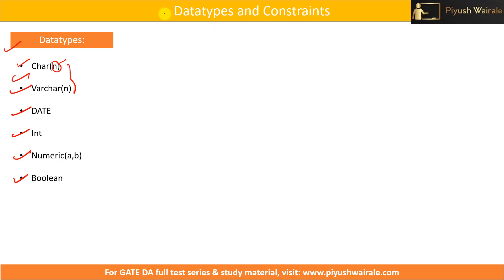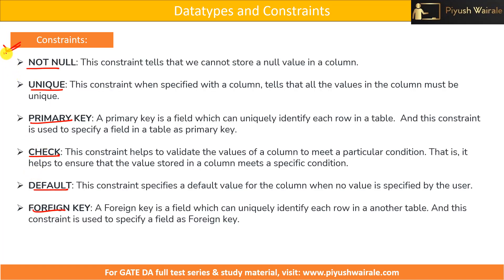In the previous lecture we discussed data types and constraints in SQL. The data types we covered are char, varchar, date, int, numeric, and boolean — all implemented in our editor. The constraints we discussed are not null, unique, primary key, check, default, and foreign key.